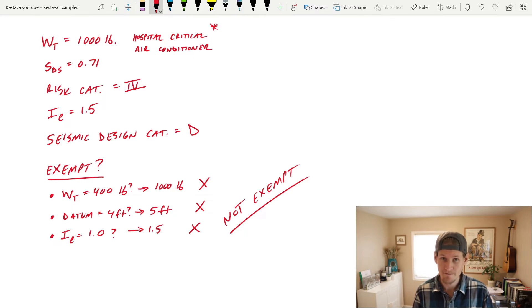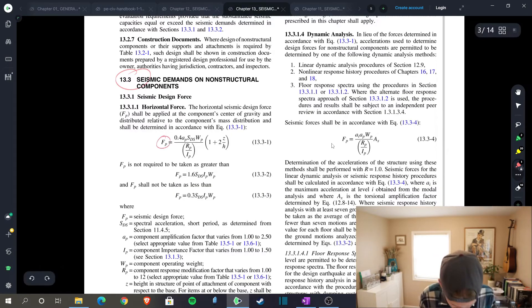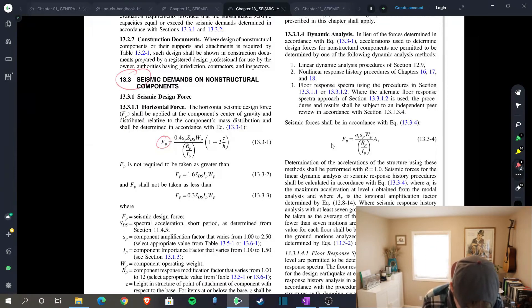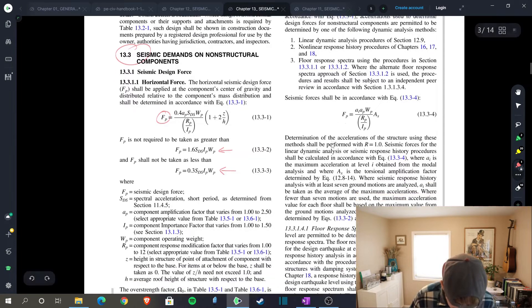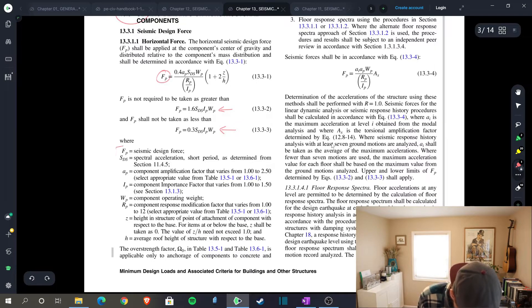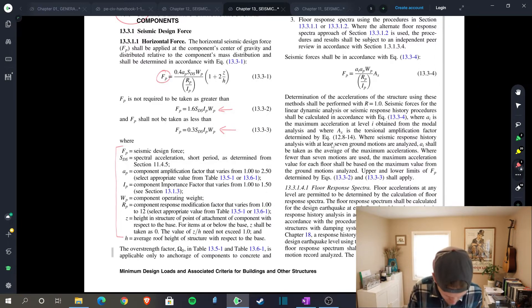Next, let's jump over to 13.3. We now want to find our horizontal force. F sub p is what it's called in this case, and you have the following equation given in 13.3-1, and then you have maximums and minimums that you also need to check for. And then everything right below it—all those variables are defined right here, so they do a great job of just giving all that info right in one place.